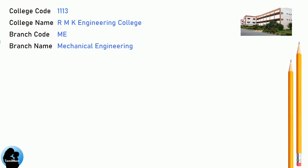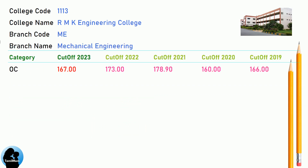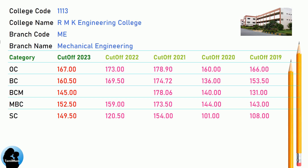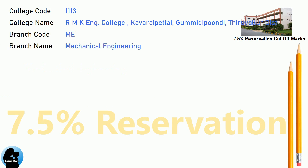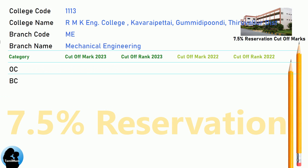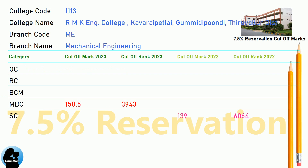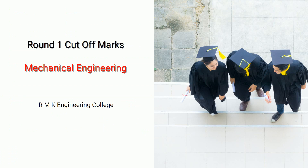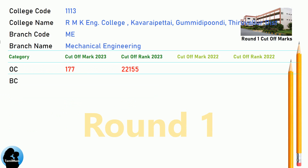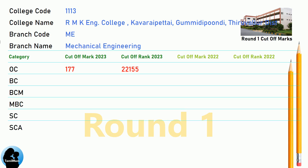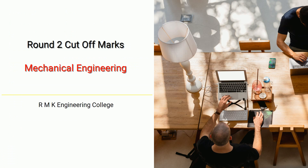RMK Engineering College in Mechanical Engineering: DNA 7.5 Reservation Cut-Off, DNA Round 1 Cut-Off, and DNA Round 2 Cut-Off.